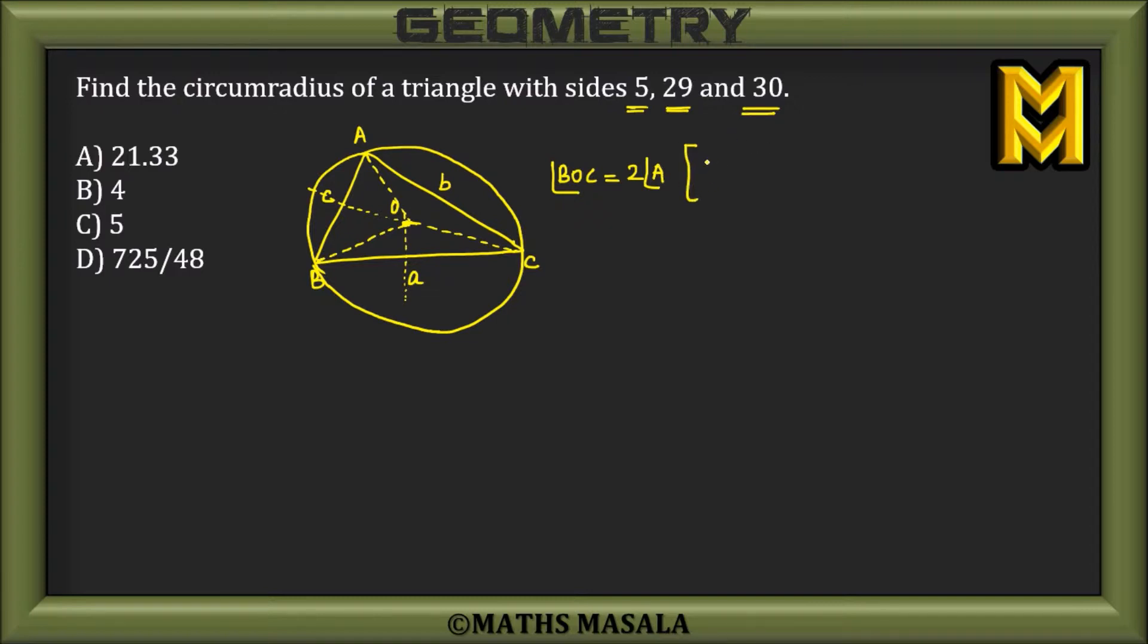has a property which states that—say this is D—since both triangles BOD and COD are congruent triangles, I can say these two angles would be equal to each other. Now, this complete angle is twice of angle A, so I can say angle BOD would